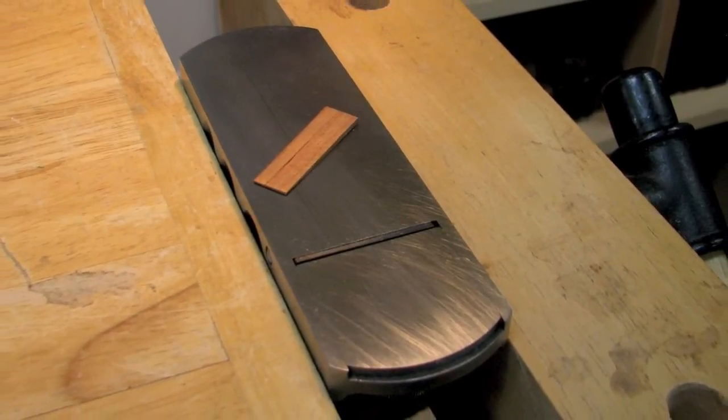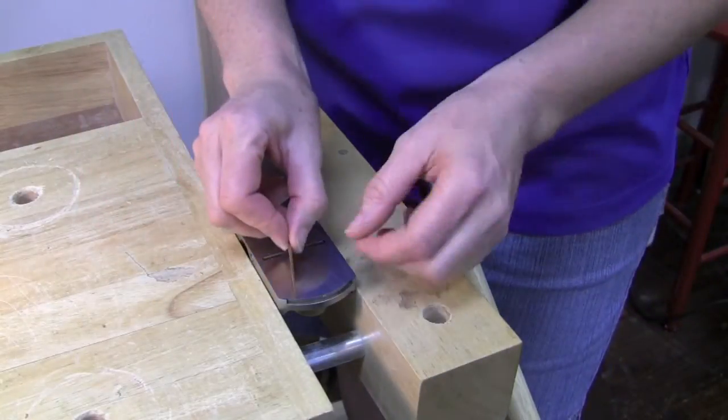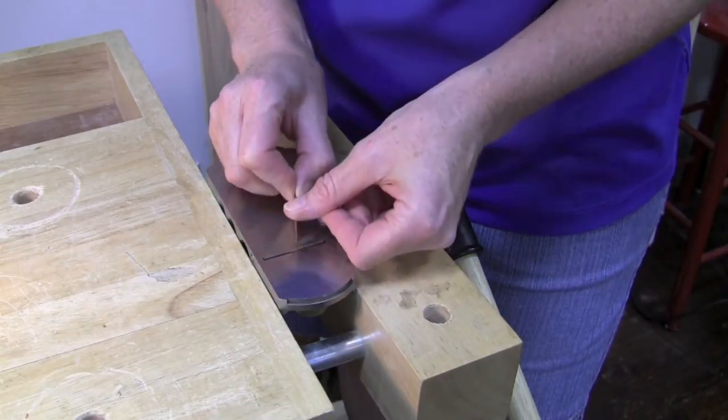The wedge should not be wider than the width of the tenon. If it is, clamp a plane upside down in your vise and slide the wedge across the blade to shave off the excess.